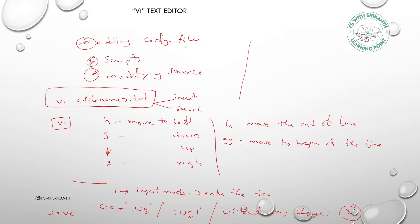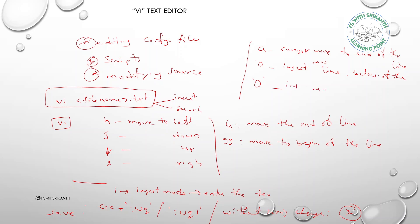Additional shortcuts: 'a' moves the cursor to the end of the line, 'o' (lowercase) inserts a new line below the current cursor position, and 'O' (capital) inserts a new line above the current line. To summarize: h=left, j=down, k=up, l=right, gg=beginning of file, G=end of file, i=insert mode, a=cursor to end of line.